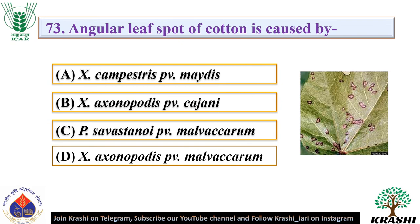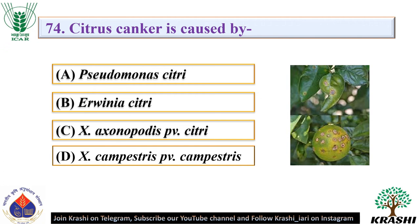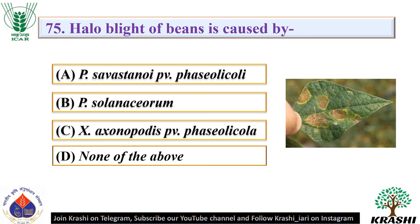Question number 73: Angular leaf spot of cotton is caused by. The correct answer is option D — Xanthomonas axonopodis pv. malvacearum. Question number 74: Citrus canker is caused by. The correct answer is option C — Xanthomonas axonopodis pv. citri. Question number 75: Hallow blight of beans is caused by Pseudomonas savastanoi pv. phaseolicola.